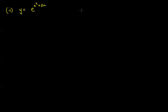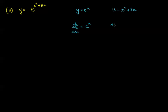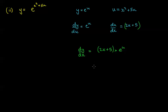y equals e to the power of x squared plus 5x. Again, let the power be u, so u equals x squared plus 5x, and then y equals e to the power of u. The derivative of y with respect to u is e to the power of u again using the chain rule. And du by dx equals 2x plus 5. Multiplying these, dy by dx equals 2x plus 5 times e to the power of x squared plus 5x.